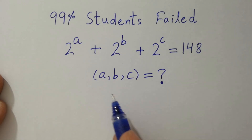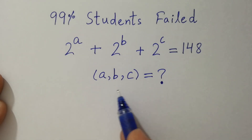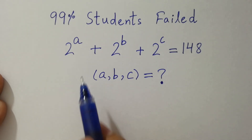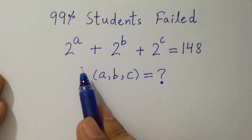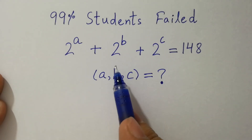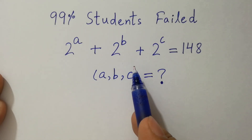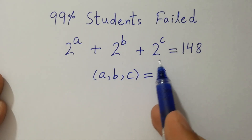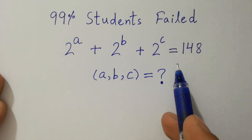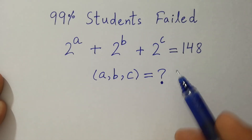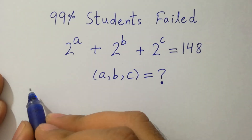Hello friends, find the value of a, b and c if 2 to the power a plus 2 to the power b plus 2 to the power c equal to 148. Let's have a solution.